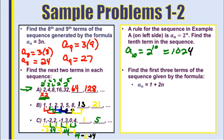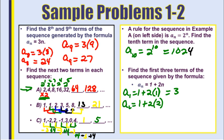The next problem says: find the first three terms of the sequence given by the formula a subscript n equals 1 plus 2 times n. For the first term, put 1 in for n: 1 plus 2 times 1 equals 3. For the second term, put 2 in for n: 1 plus 2 times 2 equals 5. For the third term, put 3 in for n: 1 plus 2 times 3 equals 7.